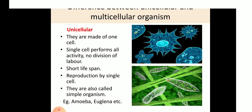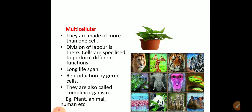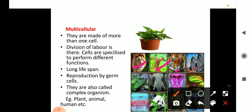Multicellular organisms, as you can see in this picture with so many organs shown, are made up of more than one cell. Division of labor is present — tissues are there, and particular tissues are specialized to perform particular functions. They have a long life span. Reproductive organs are present, and germ cells are used for reproduction. They are also called complex organisms. Examples include plants, animals, humans, elephants, frogs, and many more.